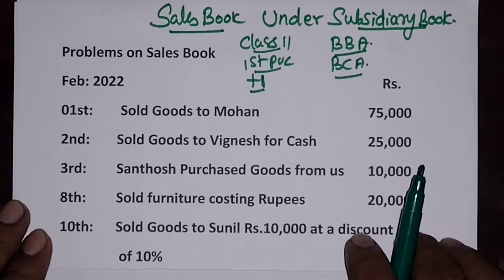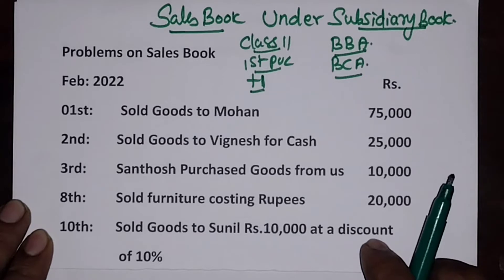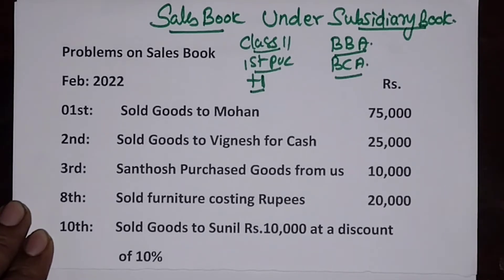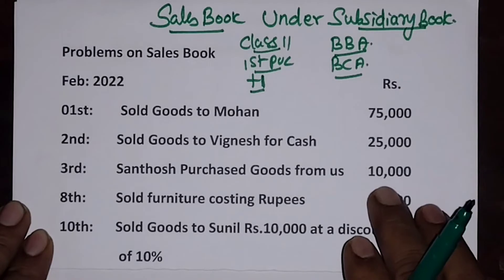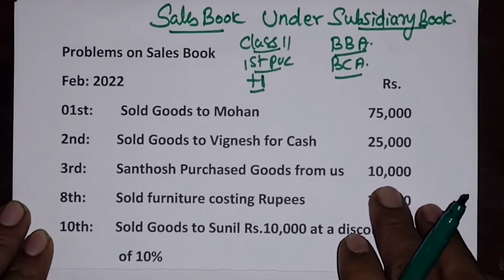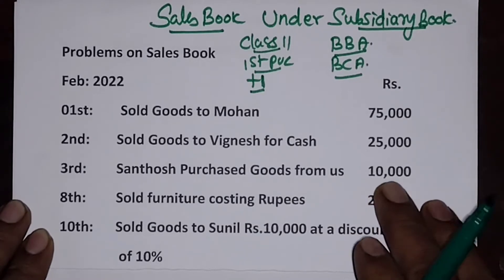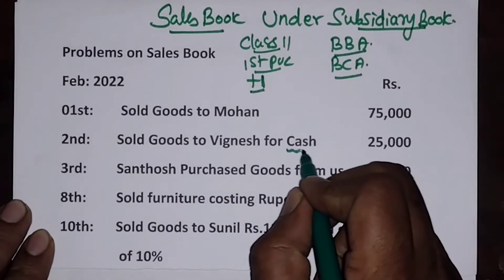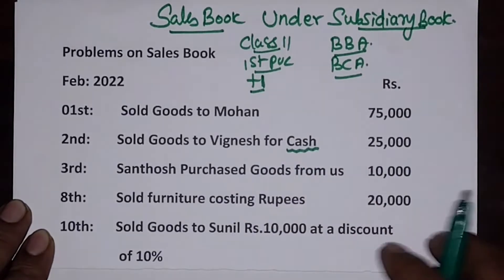Under the sales book we will record only credit transactions. We will not record any cash transaction, and also not the purchase of any asset. In subsidiary books we record only credit transactions — any cash transactions will appear in the cash book.